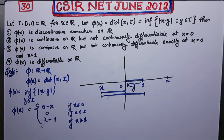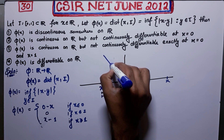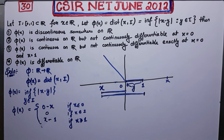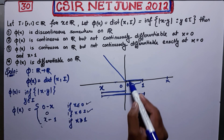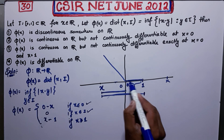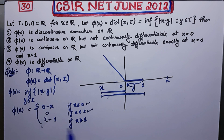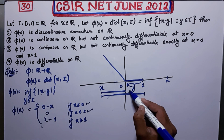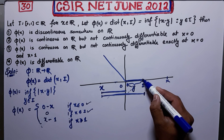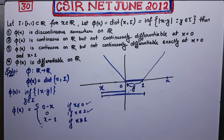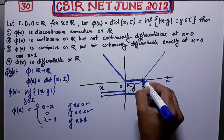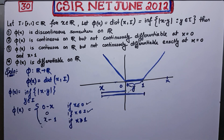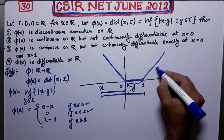So φ(x) equals −x for x ≤ 0, which is the line y = −x. I have drawn this part. On the interval [0,1] φ is completely zero. After x = 1 it is x − 1, so if you draw x − 1 you get a rising line. So this is your complete graph of φ.